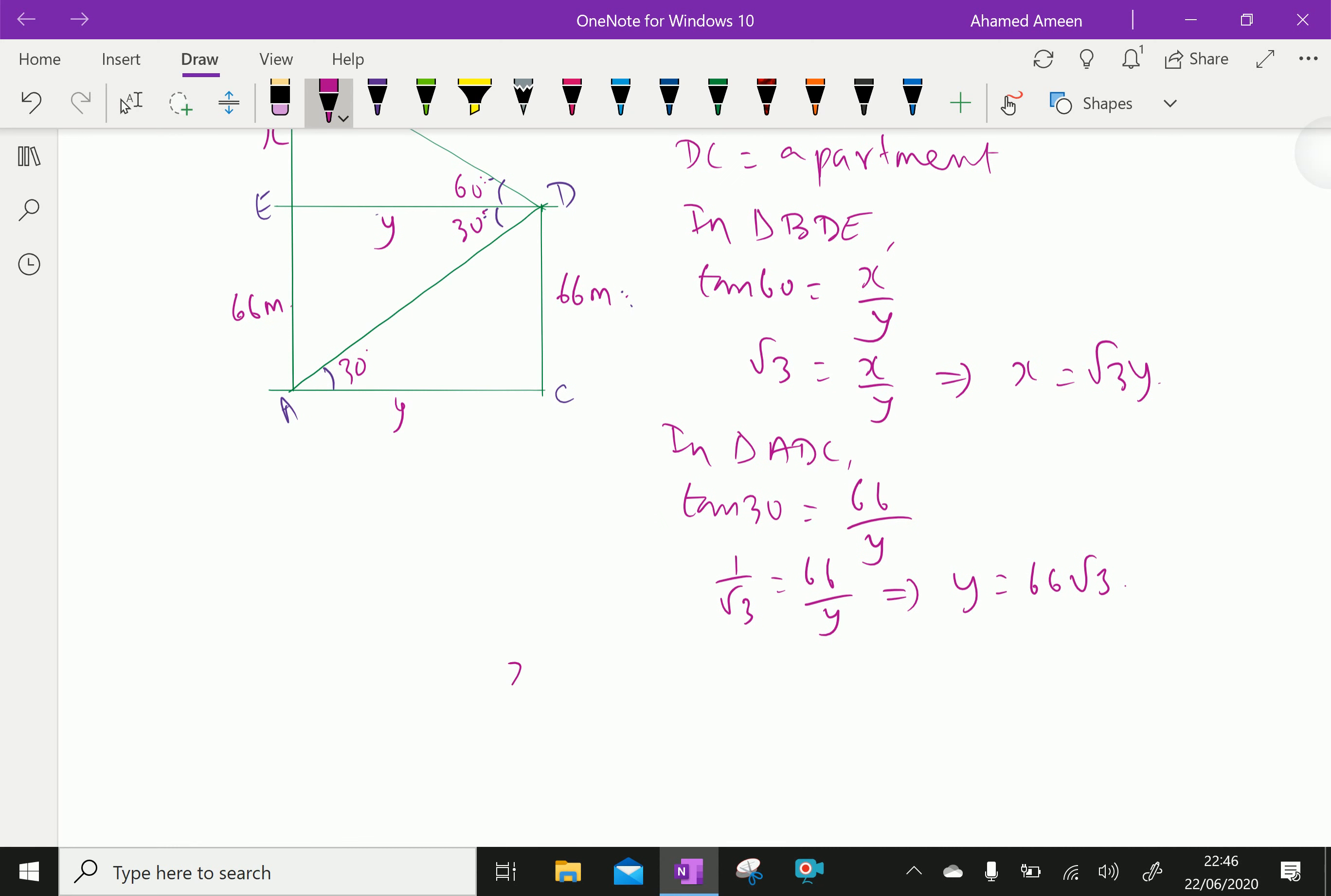Now, we have already X equals root 3 Y, but Y we have as 66 root 3. Therefore, X equals root 3 into 66 root 3. Root 3 into root 3 is 3, 3 into 66 is 198 meters.